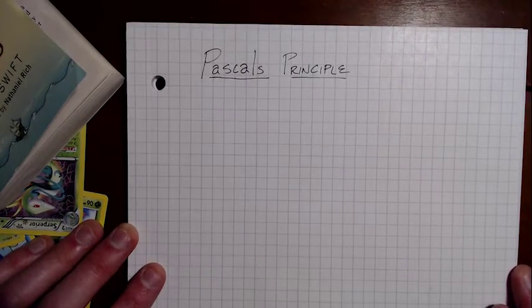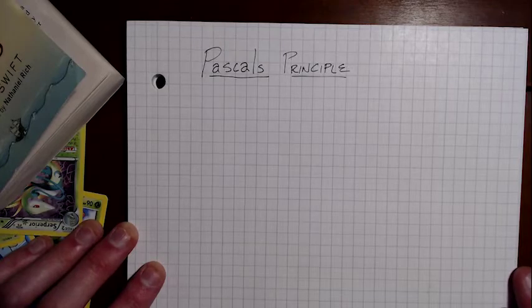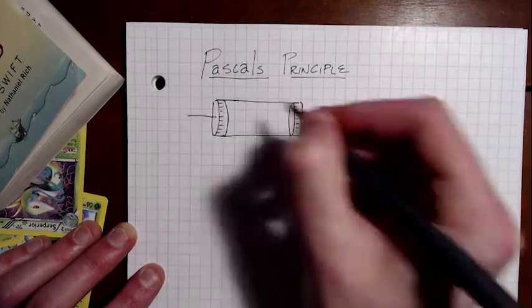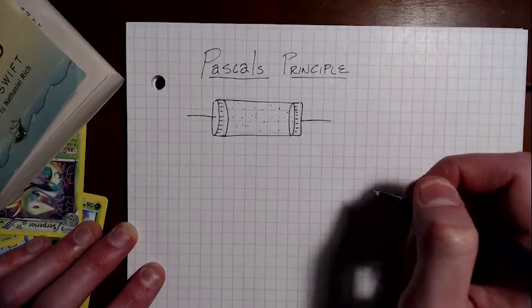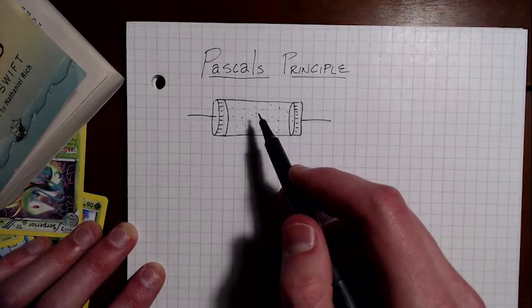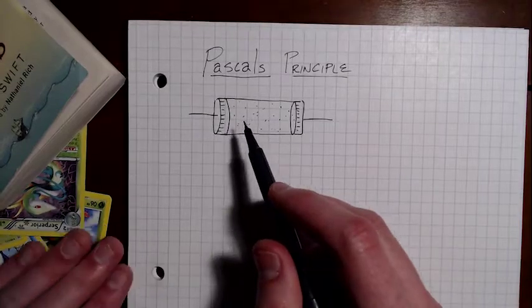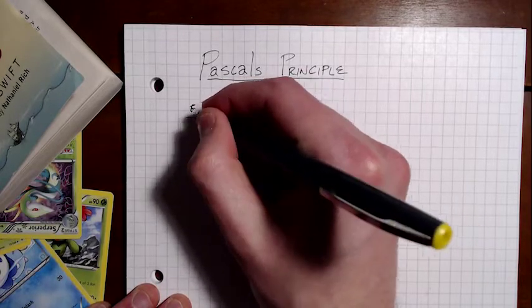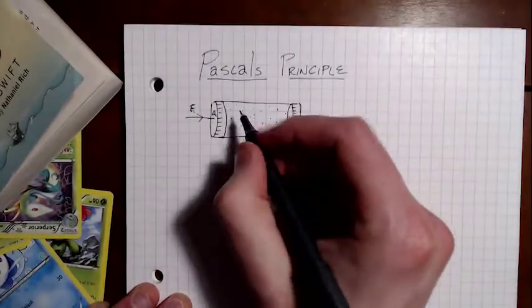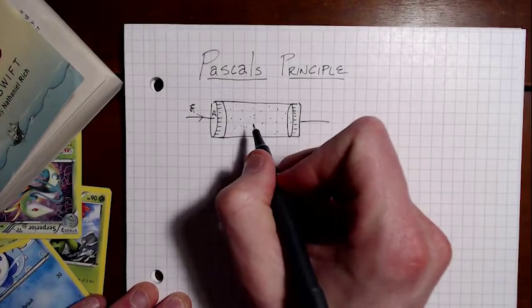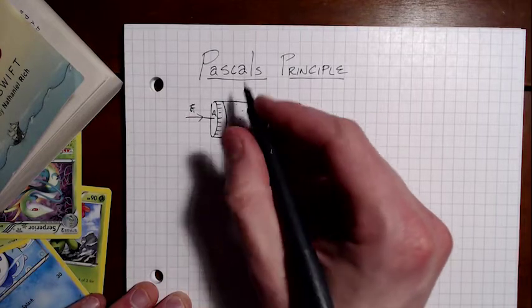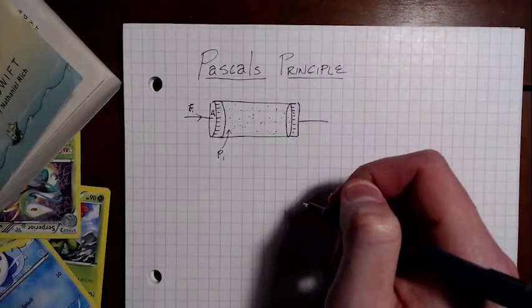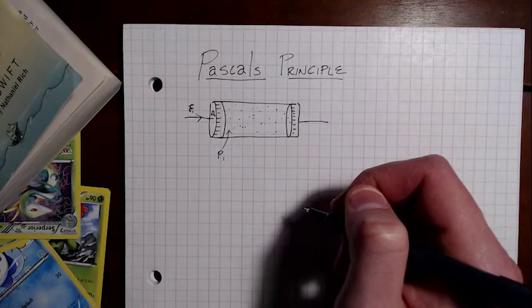Pascal, a French physicist and mathematician, among other things, lived in the early 1600s. He discovered that if you have a container filled with some sort of incompressible fluid, and you press on one end, you apply a force F1 over this area A1, then that's going to introduce a pressure into this container. And what Pascal's principle says is that that pressure P1 is going to be distributed evenly throughout the fluid and all of the surfaces of the container.